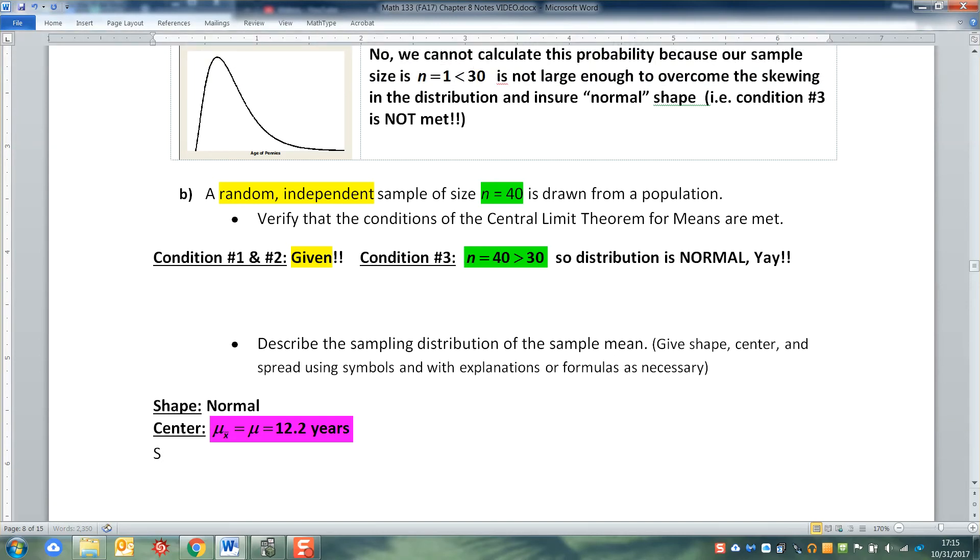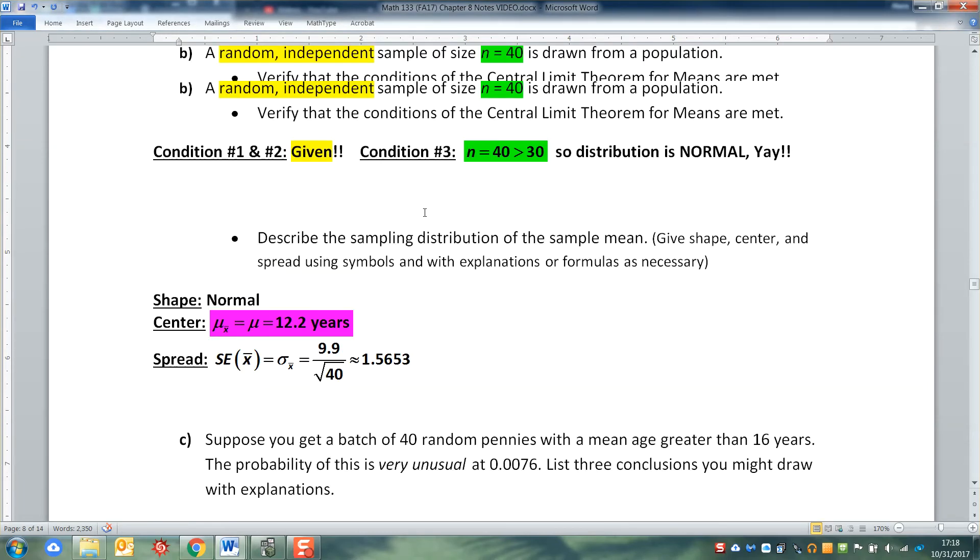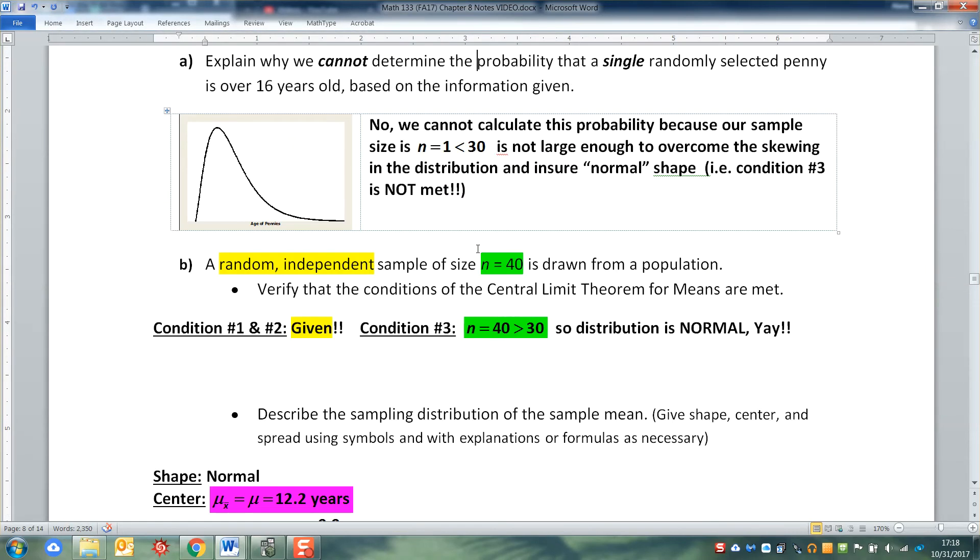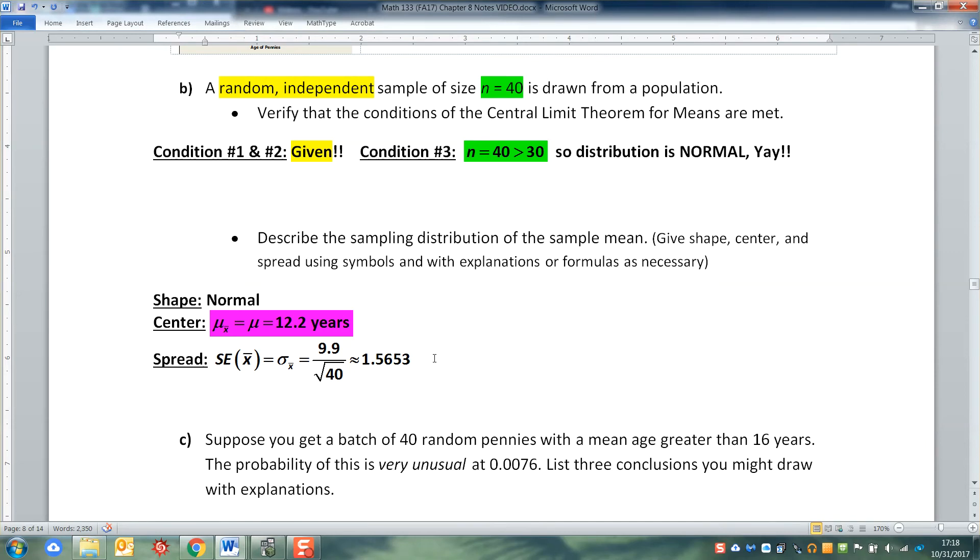And then the hardest part, the spread. Spread is the standard error, the standard error of the x bar. So the standard error of the x bar is sigma divided by the square root of n. In this case we actually have sigma. So that would give us a standard error of 9.9, because that was the sigma given right up here, 9.9. And we would divide that by the square root of n, and n for us is 40. So I'd grab my calculator and I would take 9.9 divide it by the square root of 40, press enter, and I get 1.565. So that's the standard error right there.